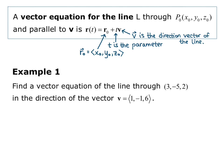Here's our first example. It says find a vector equation of the line through the point 3, negative 5, 2, in the direction of the vector v equals 1, negative 1, 6. So we have the point, and that gives us R0. R0 will be the vector 3, negative 5, 2. So our line, R of t, is equal to vector 3, negative 5, 2, plus t times the vector 1, negative 1, 6. So R0 plus tv.